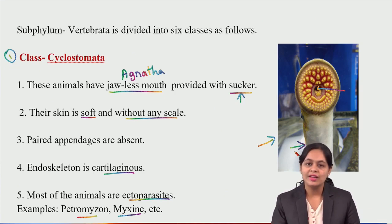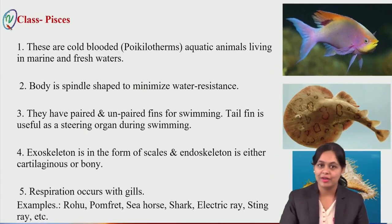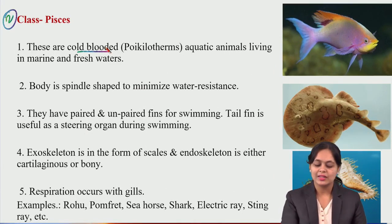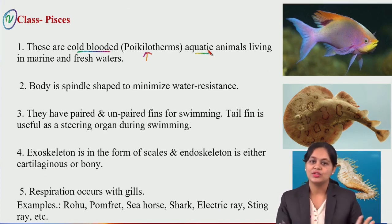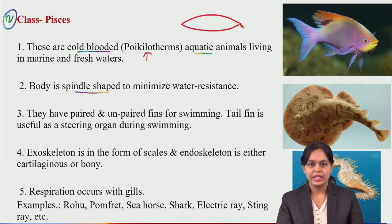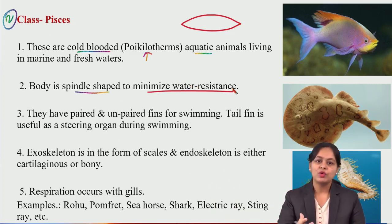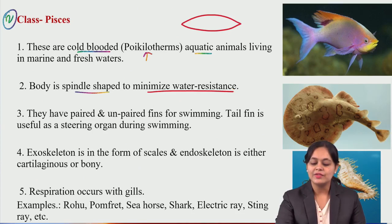This was all about the first class of Vertebrata — Cyclostomata. Now coming to the second class of Vertebrata, that is Pisces — the fishes. These are cold-blooded aquatic animals found in seas, oceans, and fresh water. The body is spindle-shaped, which helps in swimming by minimizing water resistance.